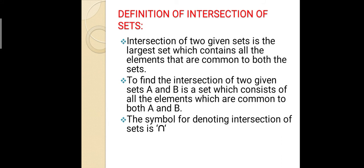Definition of Intersection of Sets: the intersection of two given sets is the largest set which contains all the elements that are common to both sets. To find the intersection of two given sets A and B, it is a set which consists of all elements common to both A and B. The symbol for denoting intersection of sets is ∩ (reverse U). The common elements of both sets are called the intersection of sets.